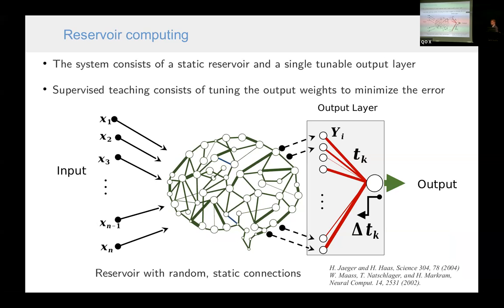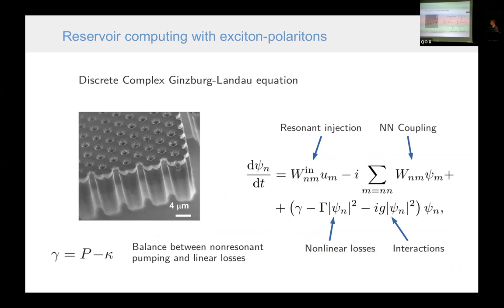Our idea was to try to implement this reservoir computing with polaritons. Our approach was the following. We will use a lattice of polaritons, polariton micro-pillars. Here it is a micrograph of polaritons, which are coupled to each other. They actually overlap each other. Maybe you cannot see that there are micro-pillars because they are very close. But they can be still described using a simple discrete equation, which includes resonant injection of pulses in each of the pillar, nearest neighbor coupling, as well as linear and non-linear losses, pumping and interactions.